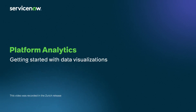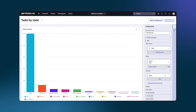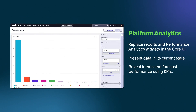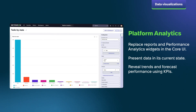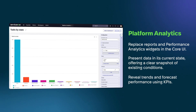Data visualizations in Platform Analytics use graphics to show table, indicator, and other data. They replace reports and performance analytics widgets in the Cord UI, combining and extending their functions. Visualizations show your data in its current state. They can also answer questions about trends and forecasts of future performance by visualizing data from indicators, also known as KPIs.